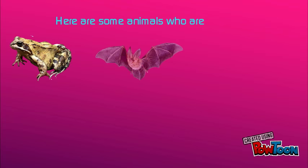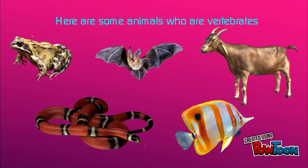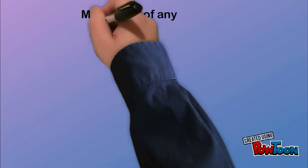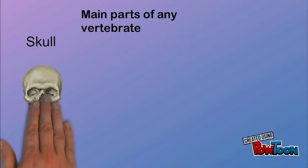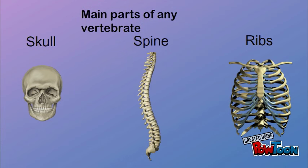Here are some animals who are vertebrates. The main parts of any vertebrate are the skull, the spine and the ribs.